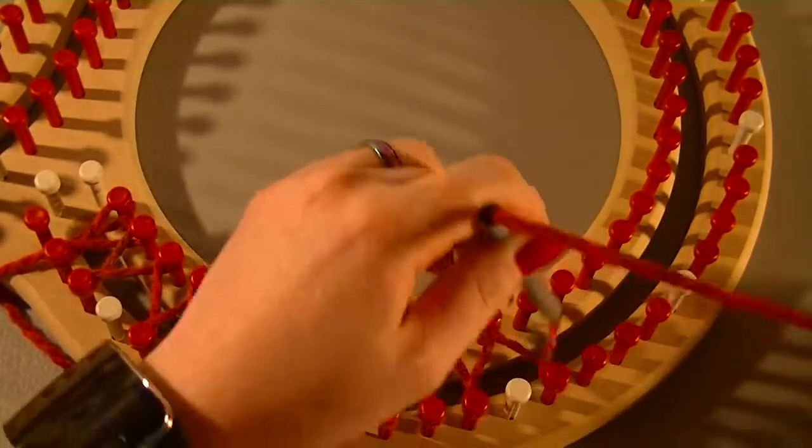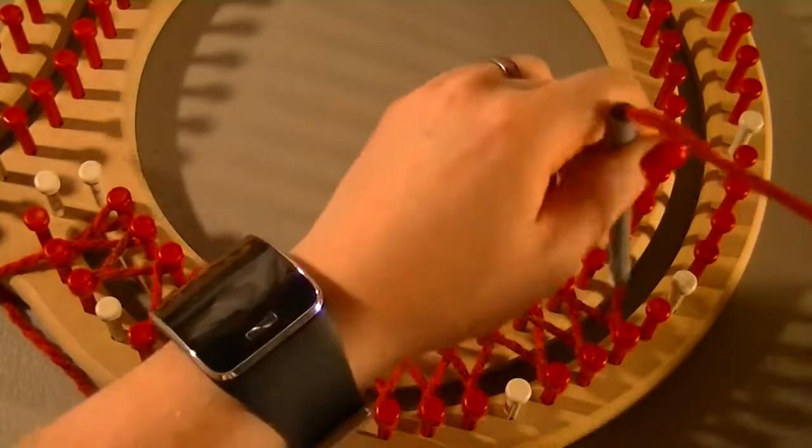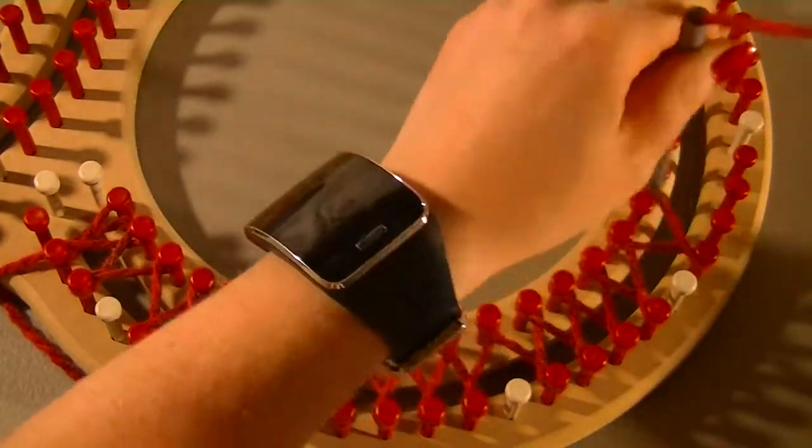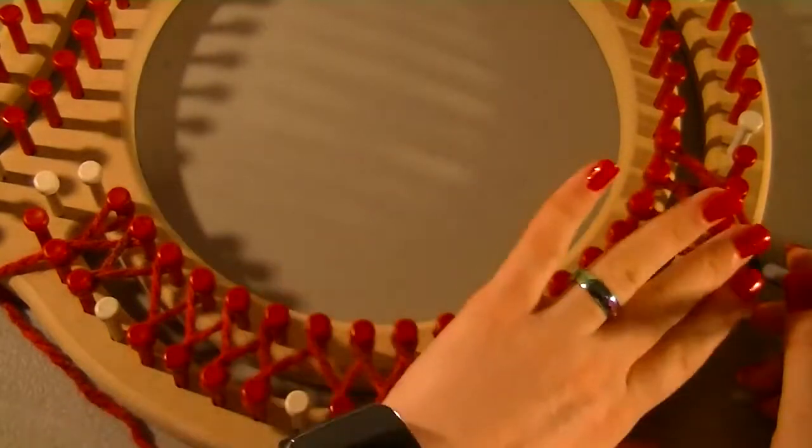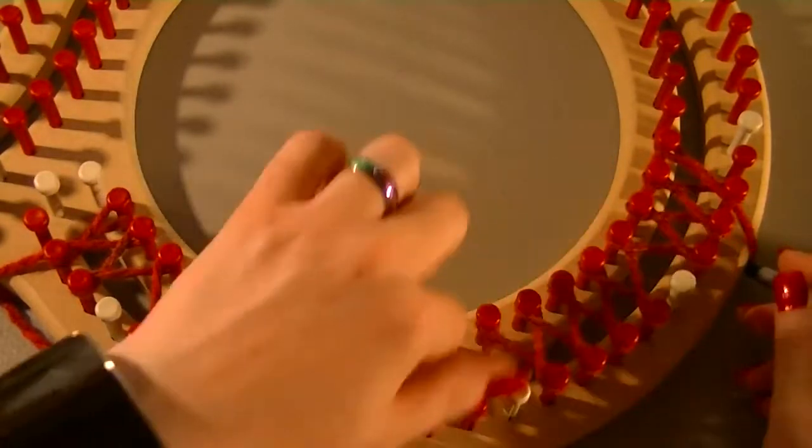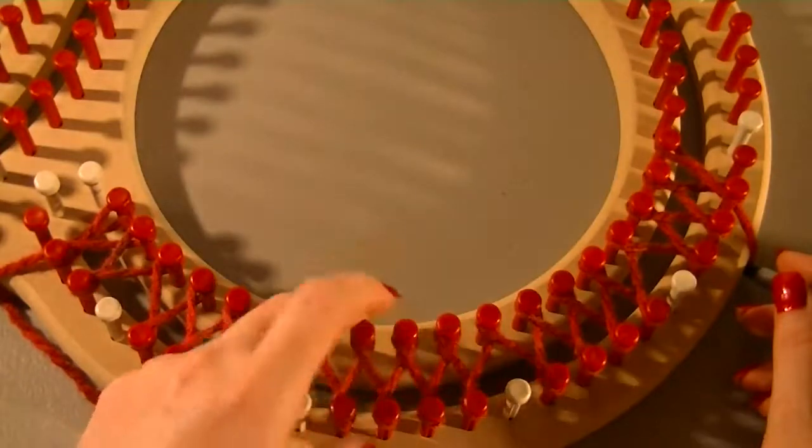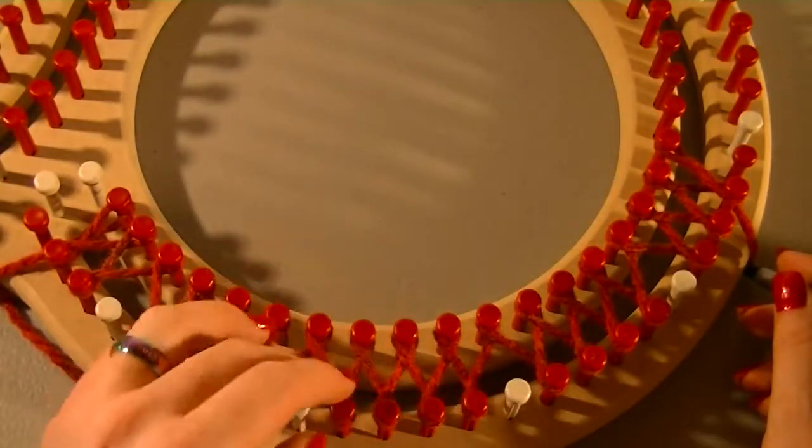The reason you skip the pegs is to keep the gauge true. The outside curve of the S shape is going to have more pegs than the inside curve, so we skip some pegs just so it evens out.